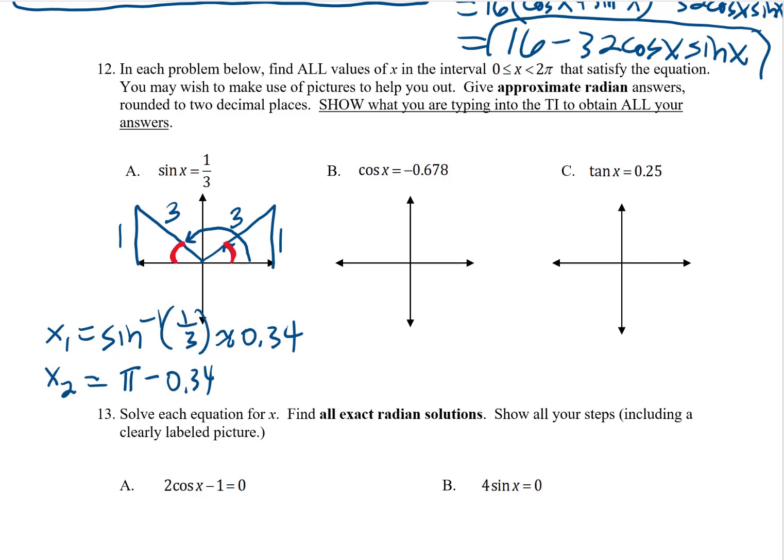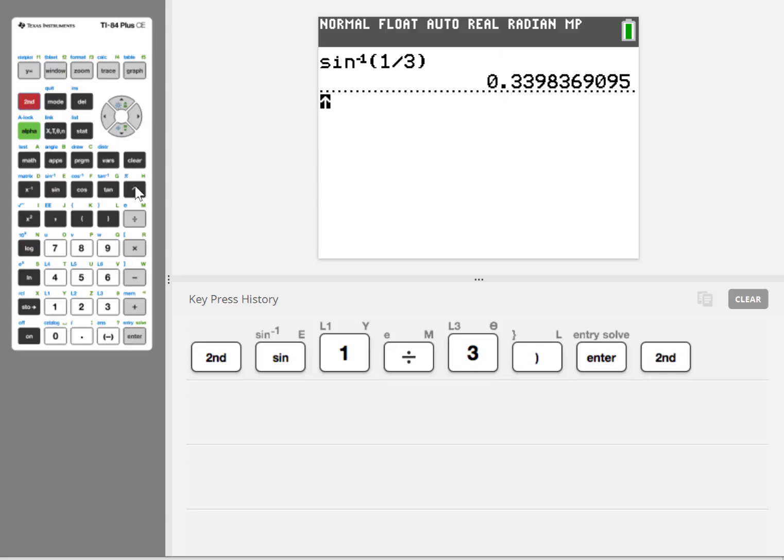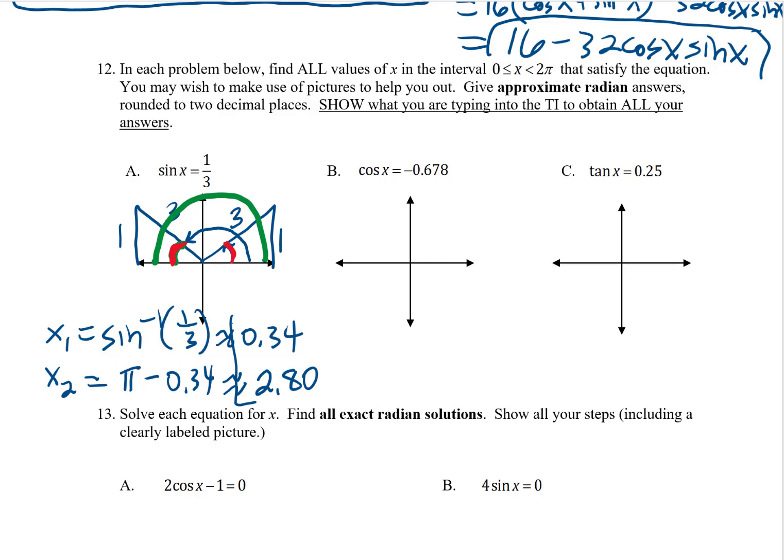In other words, here's π, right, 180. If you take out the red part, what you end up with, what you have left, is the angle that I'm interested in, that x2 angle. Well, that I can do on the calculator. In fact, what we'll do is π minus our last answer, so we don't have any rounding issues. And that comes out to be 2.80 radians. And so there are my two solutions.